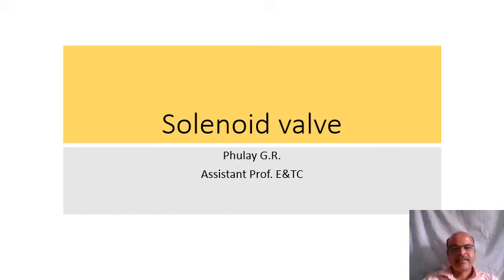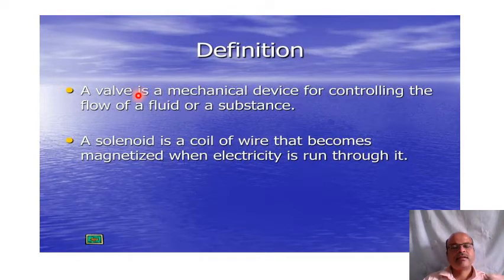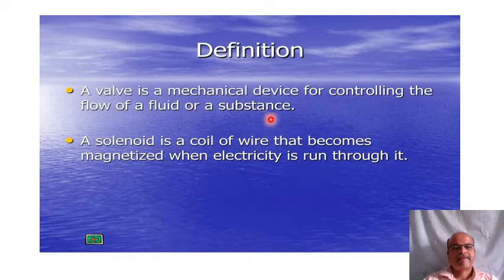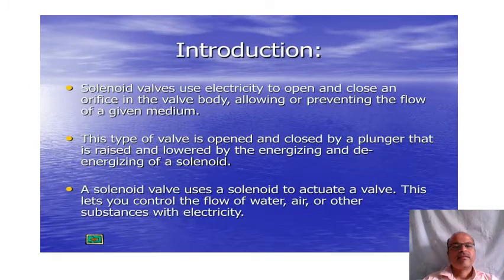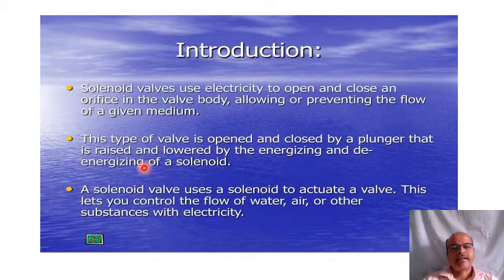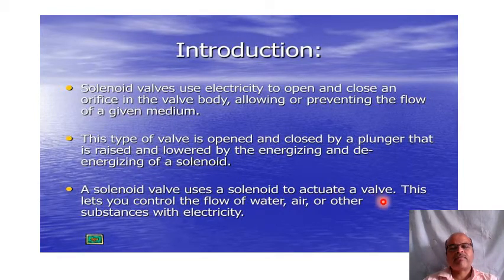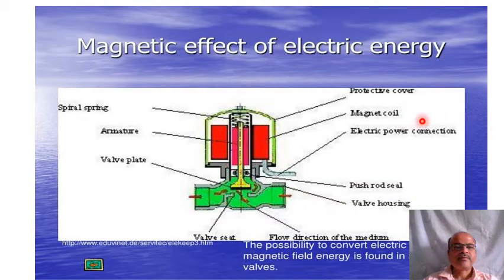Hello students. In today's lecture we will study solenoid valves. A valve is a mechanical device for controlling the flow of a fluid or substance. A solenoid is a coil of wire that becomes magnetized when electricity is run through it. A solenoid valve uses electricity to open and close ports in the valve body, allowing or preventing the flow of a given medium.